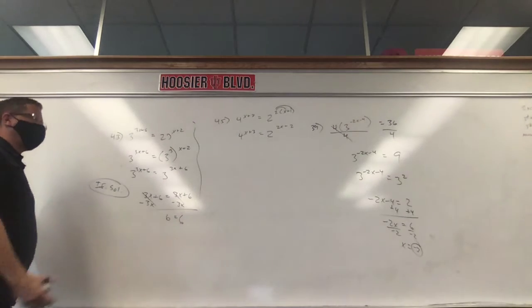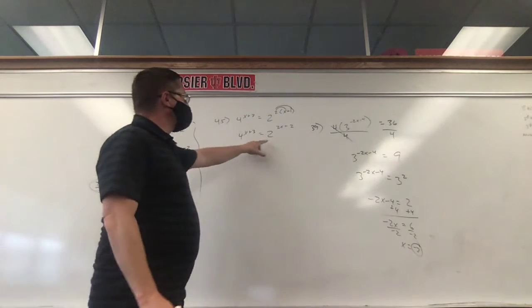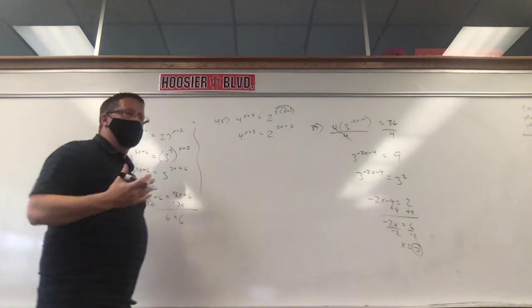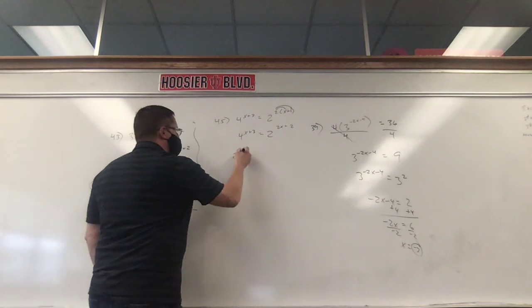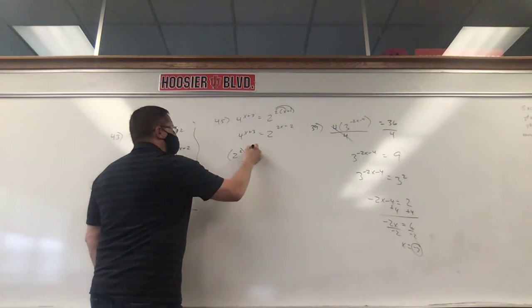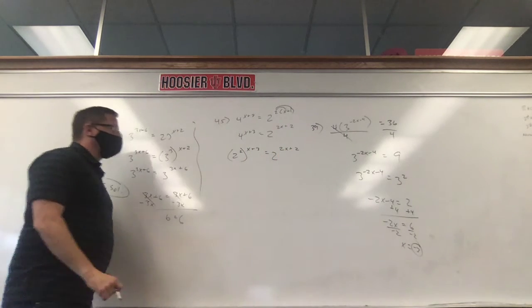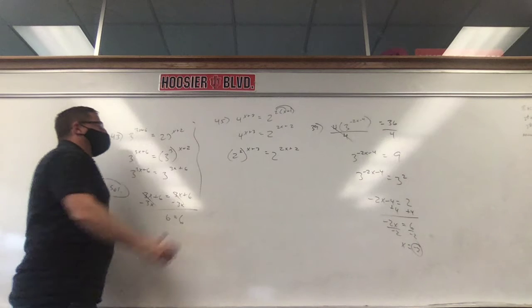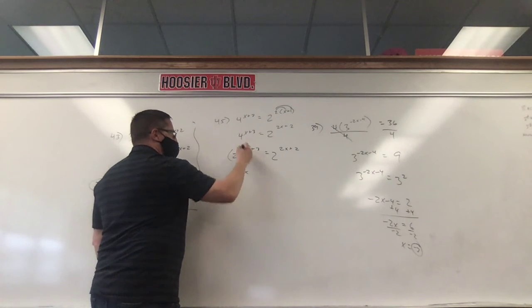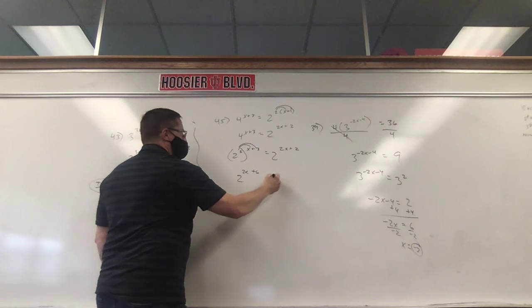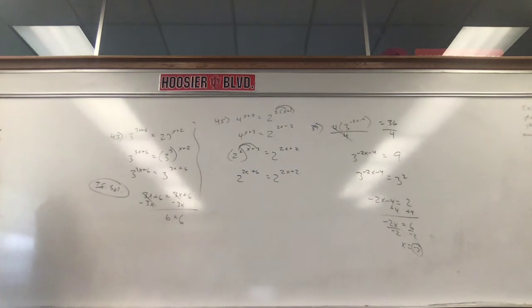Our bases are not the same. So we're going to make them the same. I could rewrite 4 using a 2. Again, you might say, well, it's 2 times 2. Yeah. Another way of saying 2 times 2, though, is 2 to the power of 2 to the X plus 3 equals 2 to the 2X plus 2. We have a power to a power, so we multiply them. 2 times X, 2 times 3.